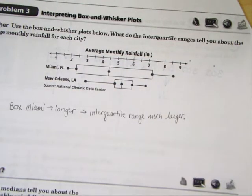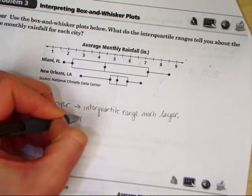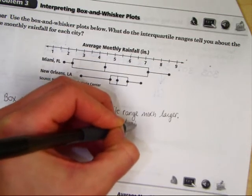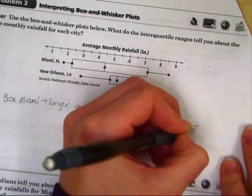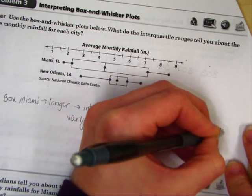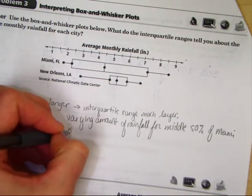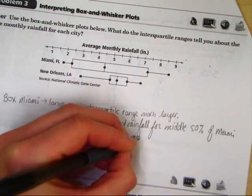Well, because the box for Miami is much longer, that implies that the interquartile range is much larger. Now, what does that mean? That means that the middle 50% of Miami's monthly rainfall vary more widely than what happens in New Orleans. So what we're going to say is the varying amount of rainfall for the middle 50% of Miami is much more widespread than New Orleans.